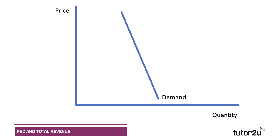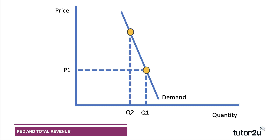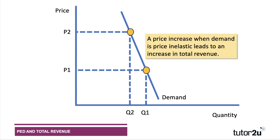Here's a fairly inelastic demand curve with an initial price and quantity of P1 and Q1. Total revenue is price times quantity — revenue per unit times the amount sold. If we increase the price to P2, our quantity demanded will contract, there'll be a fall in sales, but we're getting a higher price per unit. In this situation, total revenue will indeed go up.